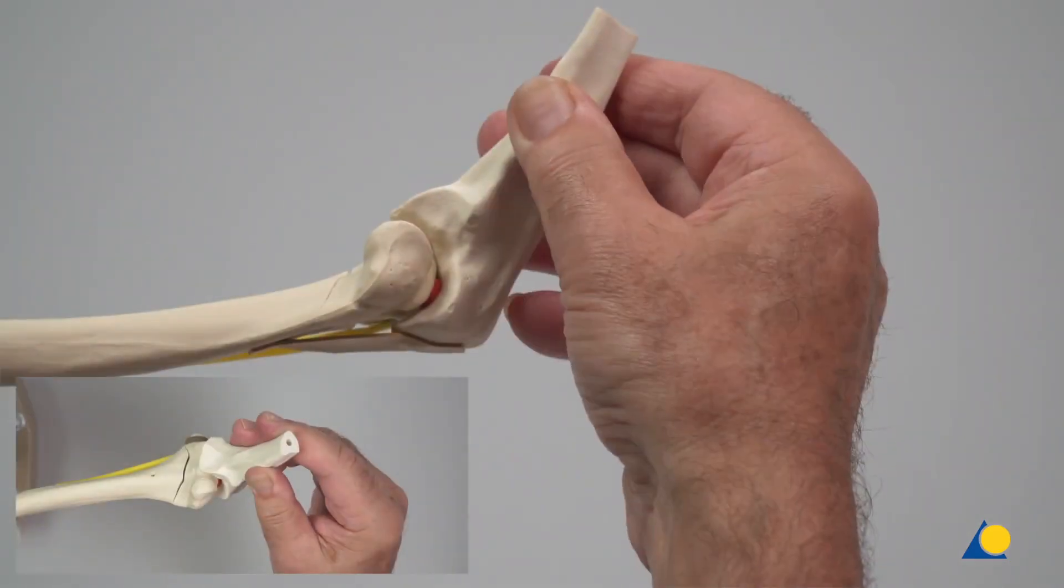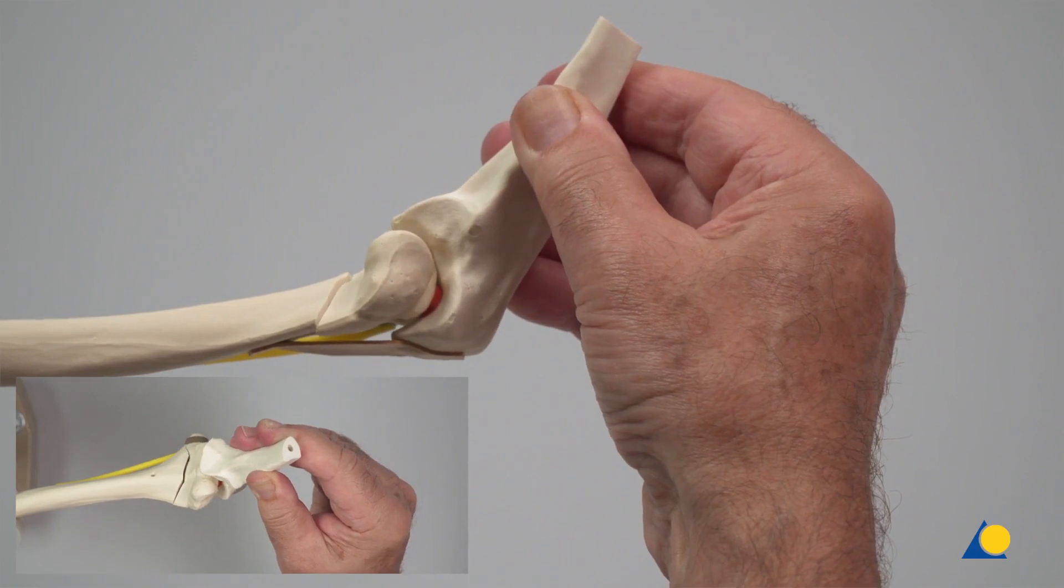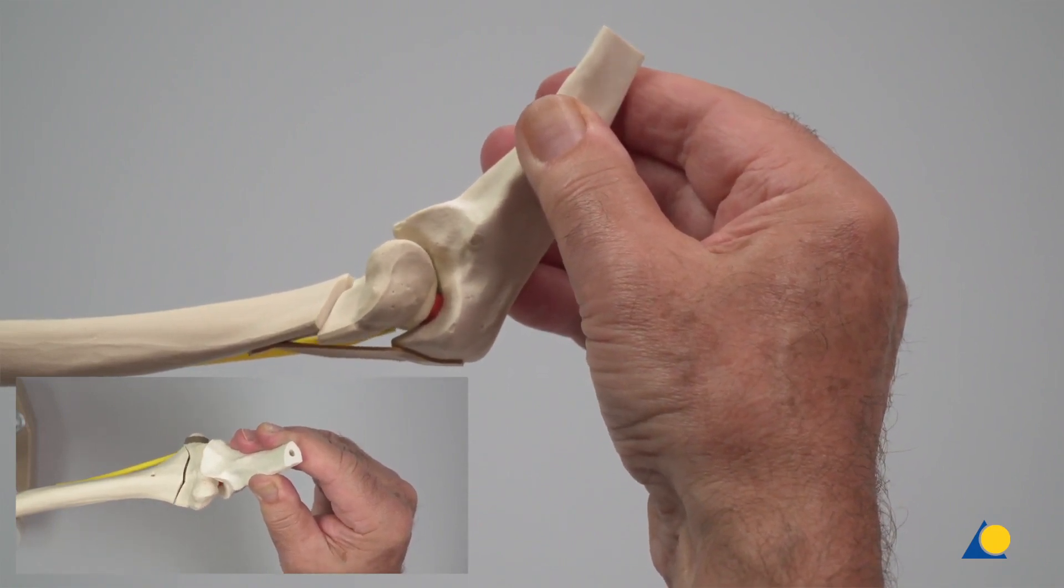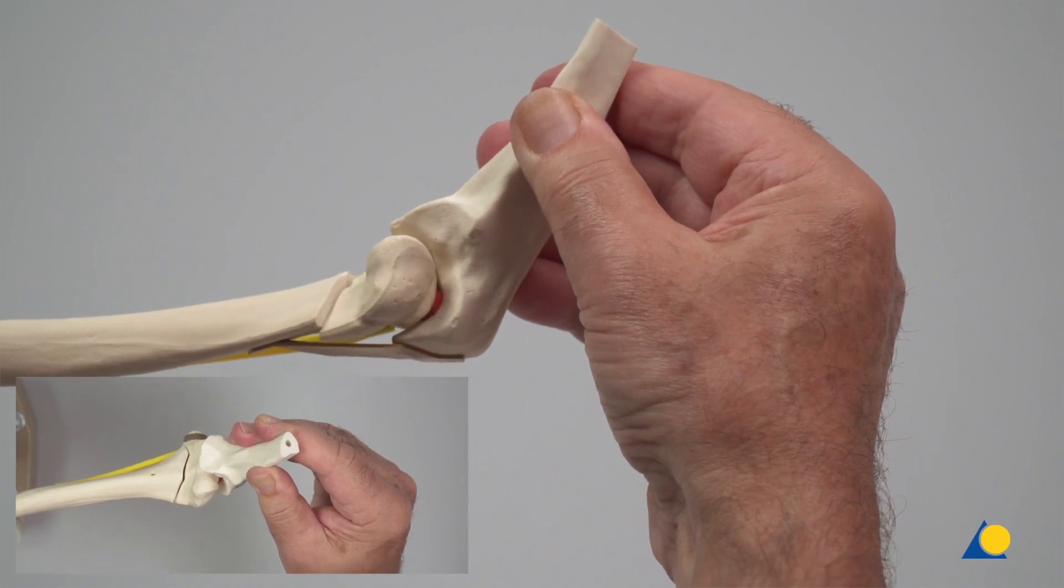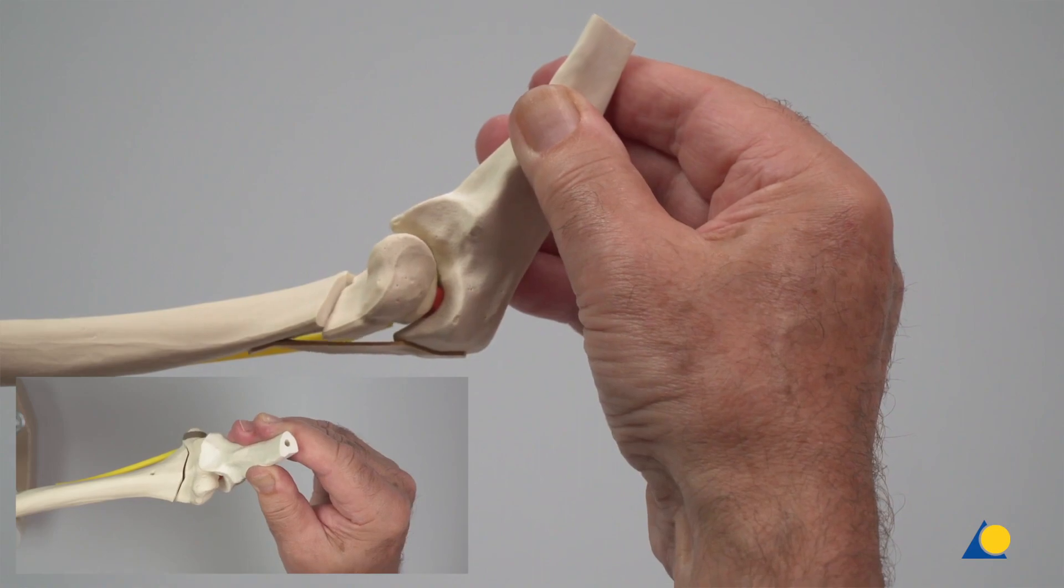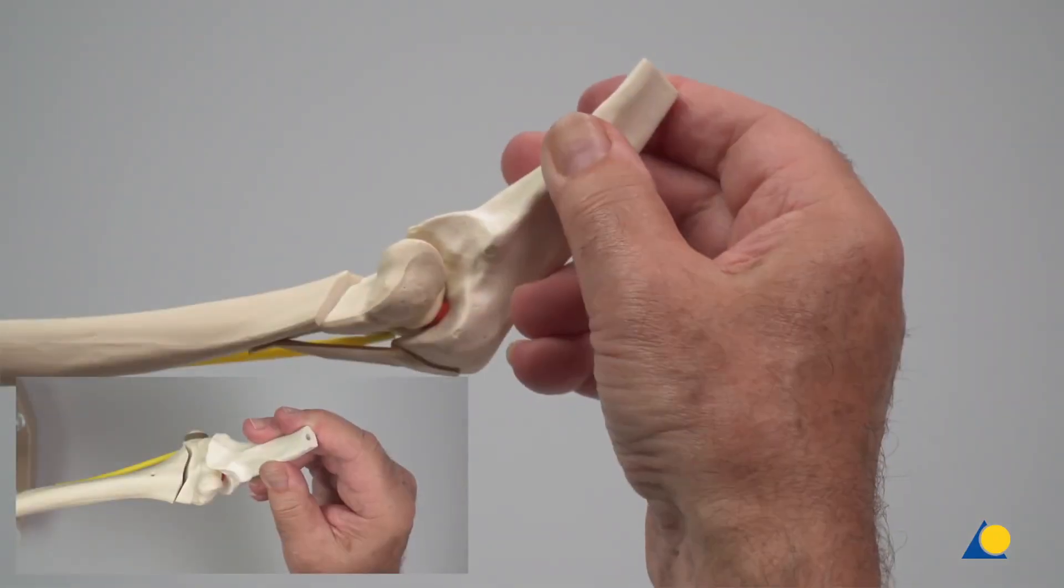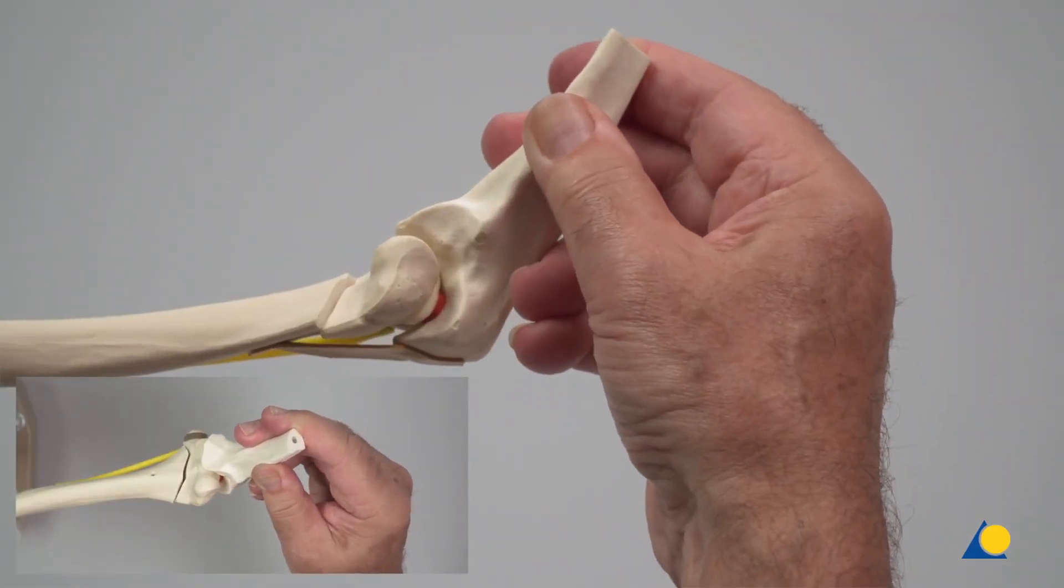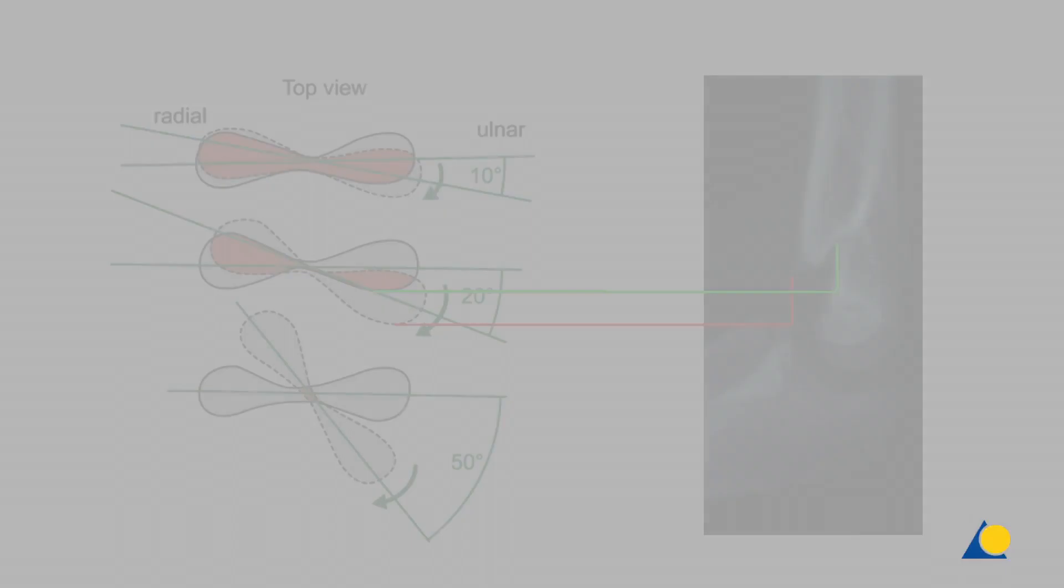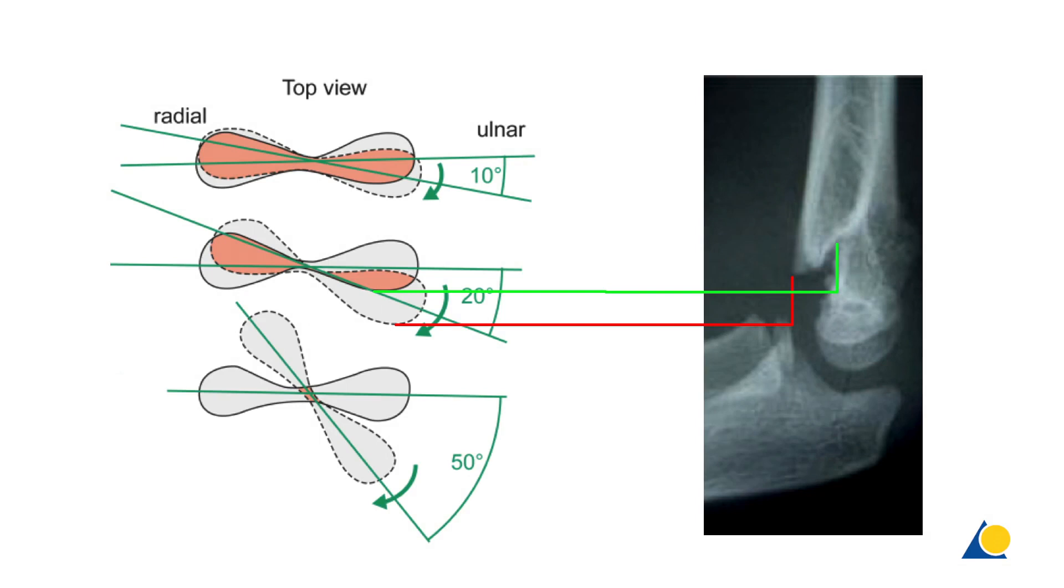Observe that, if the fragment is translated slightly medially or laterally, the axis of the forearm is unaffected. In addition, slight medial or lateral translation can be corrected with relative ease. However, rotation of the fragment results in malalignment of the forearm axis to that of the humerus. Additionally, rotational failure results in loss of contact between the fragment and the main fragment surface.